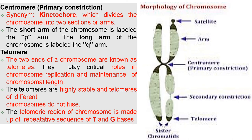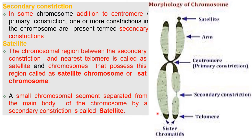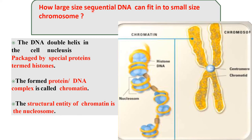Secondary constriction: in some chromosomes, in addition to the centromere or primary constriction, one or more constrictions in the chromosome are present and they are termed secondary constrictions. Satellite: the chromosome region between the secondary constriction and the nearest telomere is called a satellite, and the chromosome that possesses this region is called a satellite chromosome or SAT chromosome. A small chromosomal segment separate from the main body of the chromosome by a secondary constriction is called a satellite.